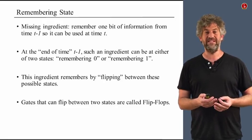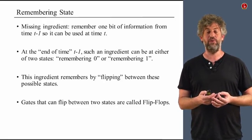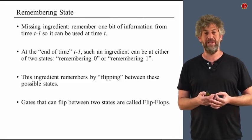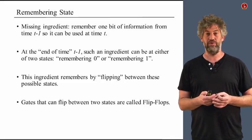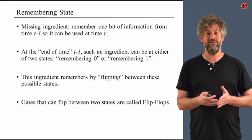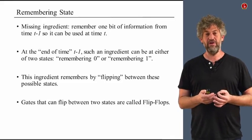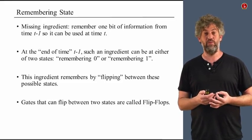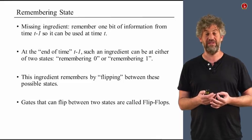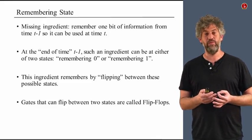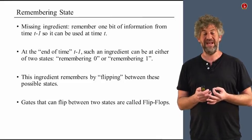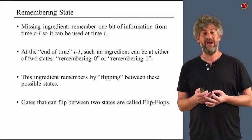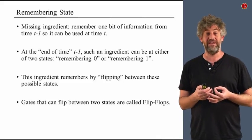The missing element is something very basic: we need something that can actually remember one bit of information — move one bit of information from time t minus 1 to time t. We have lots of combinatorial logic that can do any kind of manipulation within a single time unit, but actually moving information from time t minus 1 to time t is still missing.